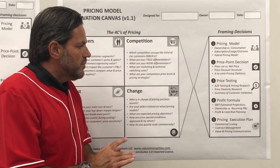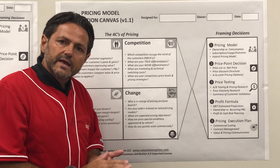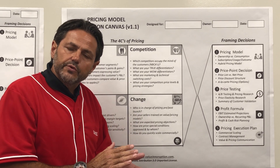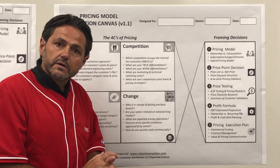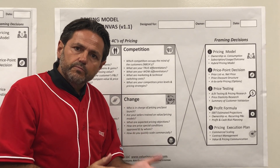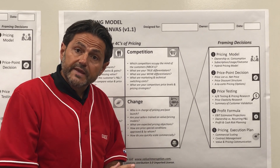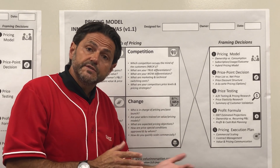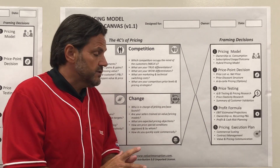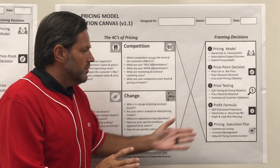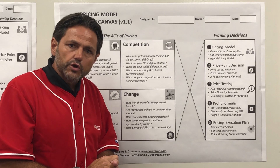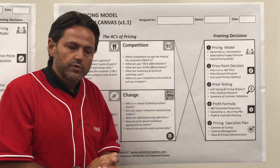On the profit formula, what is my EBIT estimate projection? How does my EBIT change whether I do a recurring business model or an ownership model? Looking at profit projection but also cash flow implications, because moving to more recurring businesses or usage-based pricing is going to impact your cash flow. At the end, it's all about scaling and executing the launch of your startup, your innovation, or your digital offer.